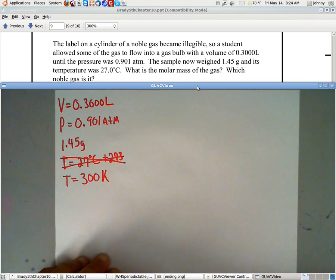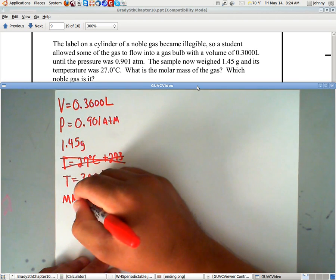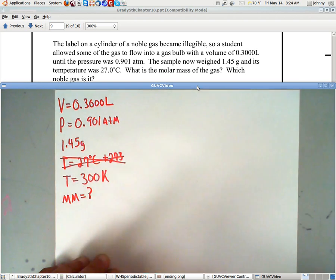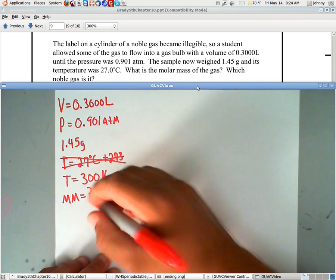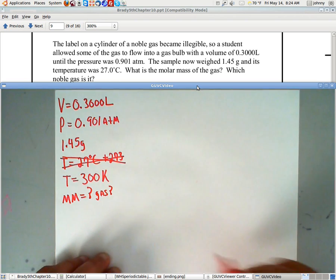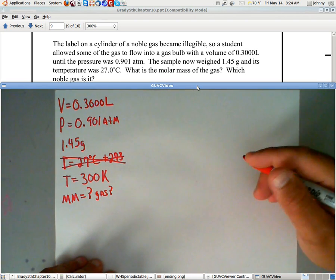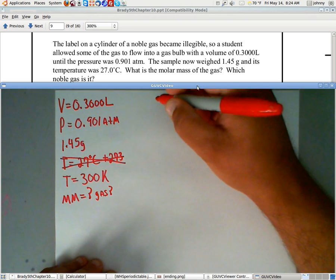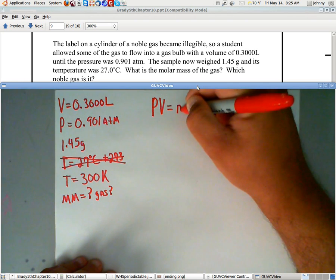They want to know the following. What is the molar mass of the gas? And which is it? Alright, let's see what we can do here. Well, we need the ideal gas law equation, the PV equals nRT.